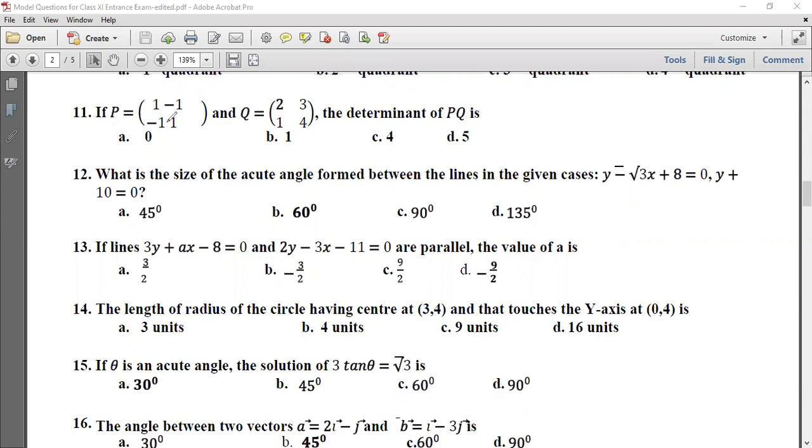Problem 11: If p is equal to 1 minus 1, 1, 1, and q is equal to 3, 1, 4, the determinant of pq is. So I am going to discuss pq. Then we will use row by column multiplication. 1 into 2, minus 1 into 1, 2 minus 1.